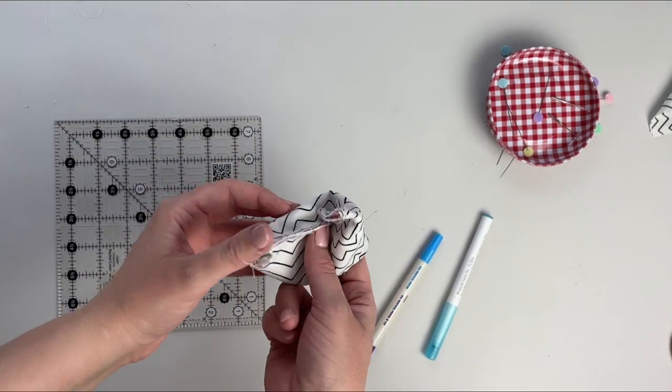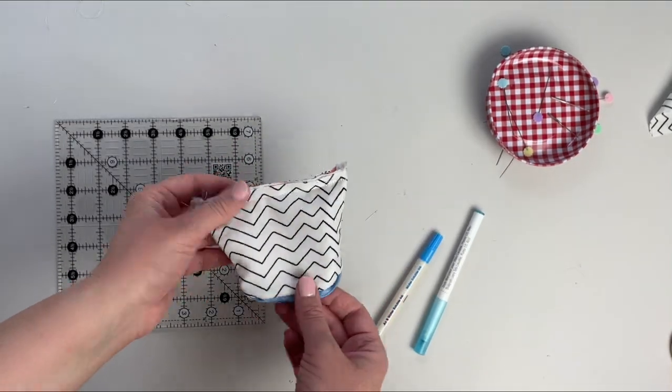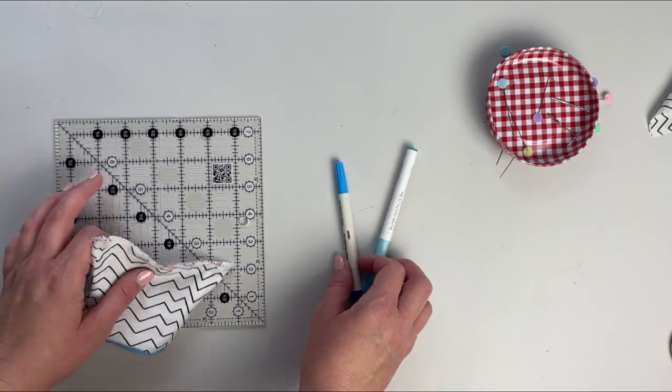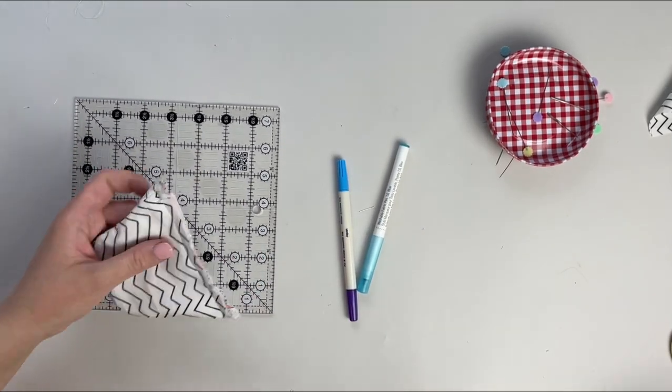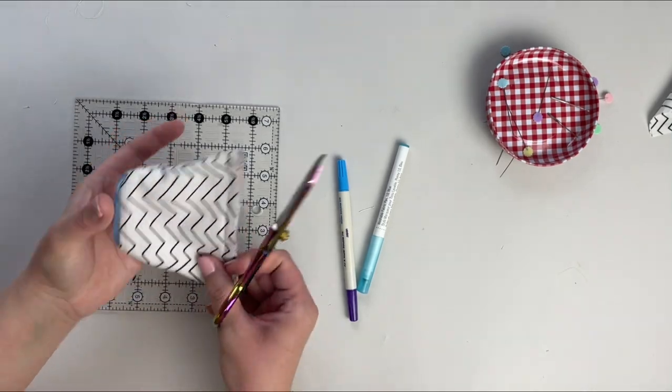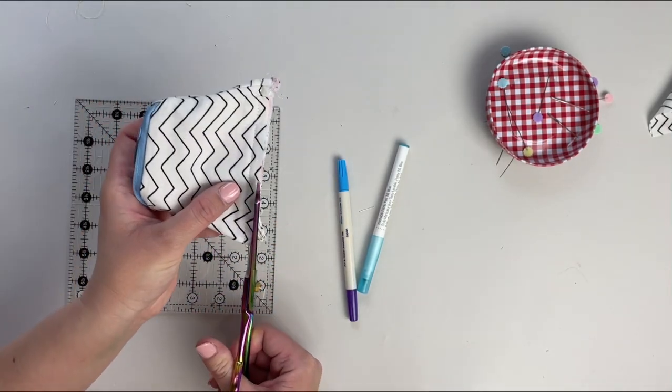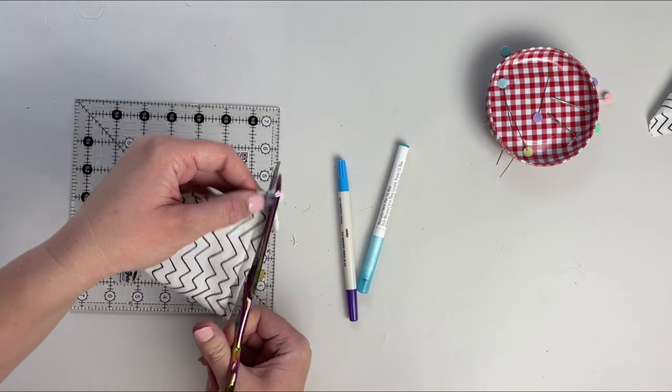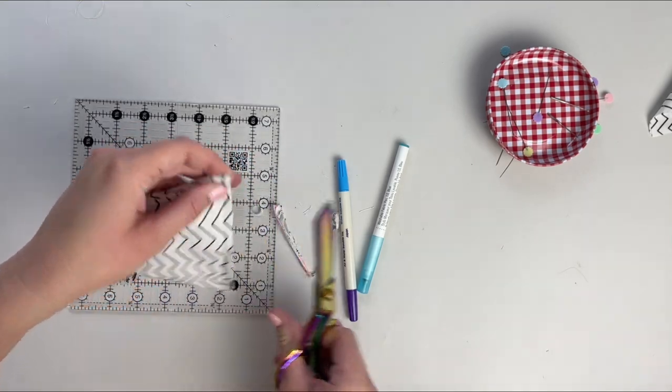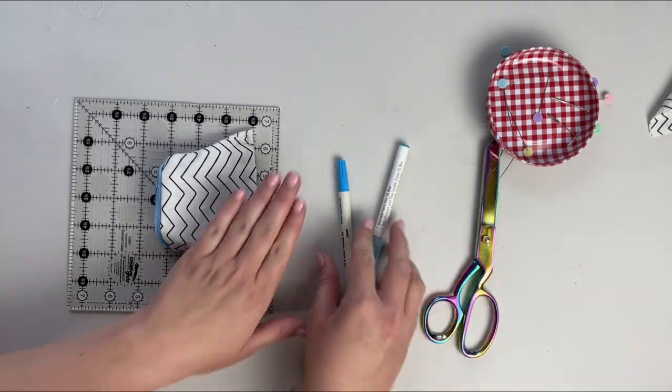Okay, so the bag is closed at the bottom, and for this last step you're going to need a fabric marker and a ruler. So first we're going to trim the bottom of the bag down just a little bit to about a quarter inch. If you want to finish the seam allowance at this point, you can either zigzag stitch it or serge it.